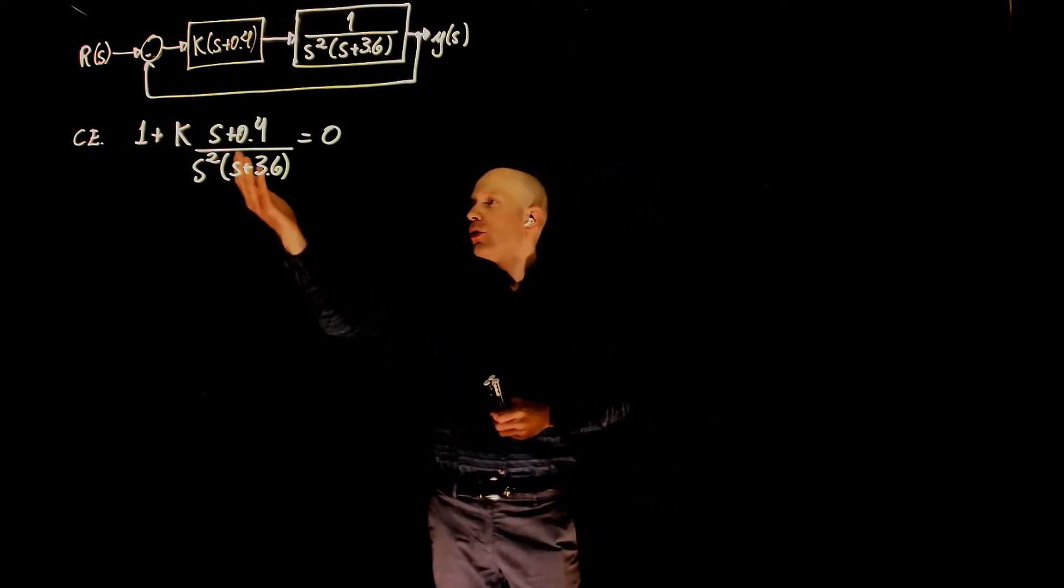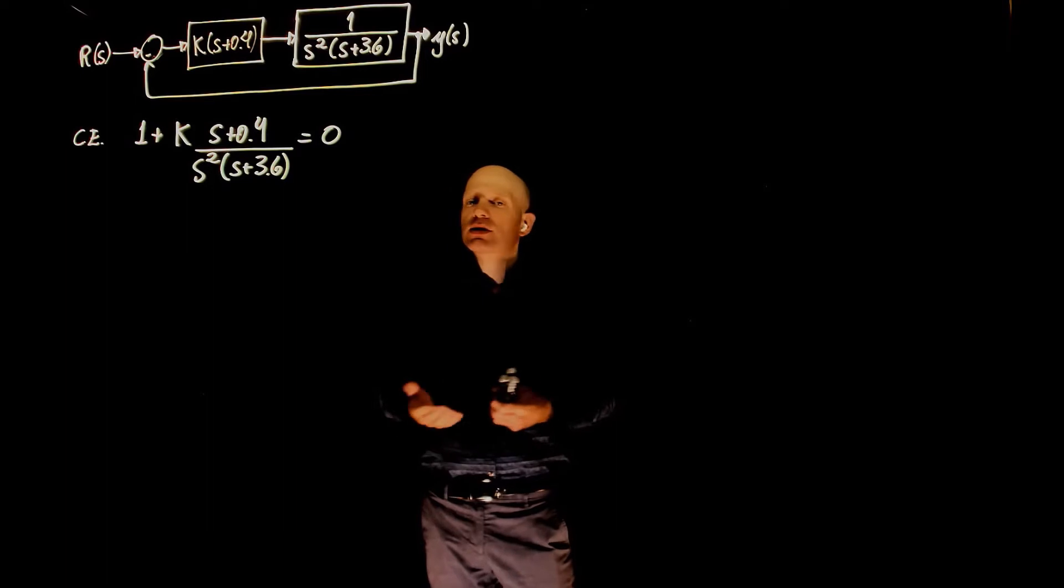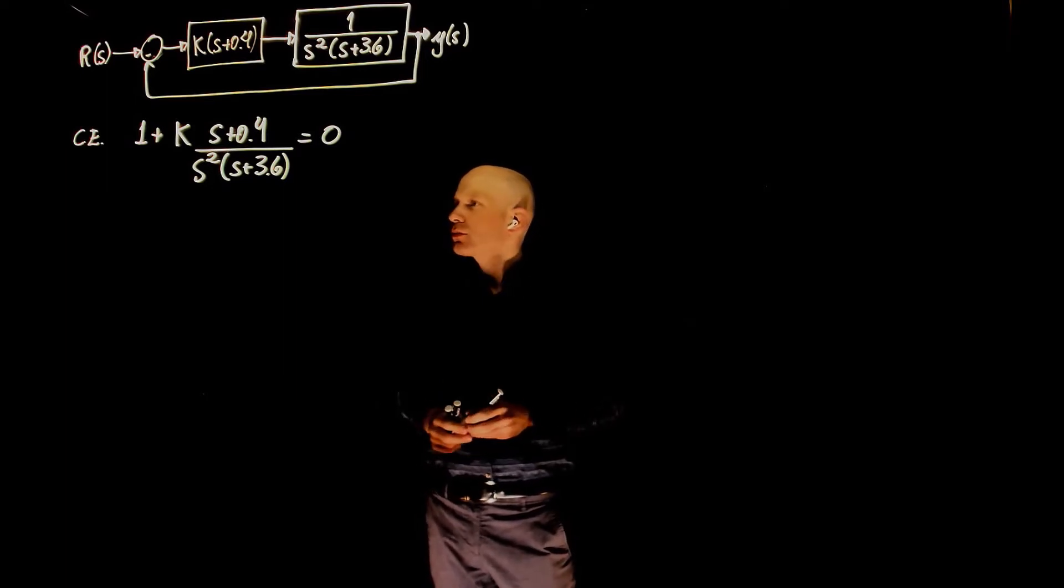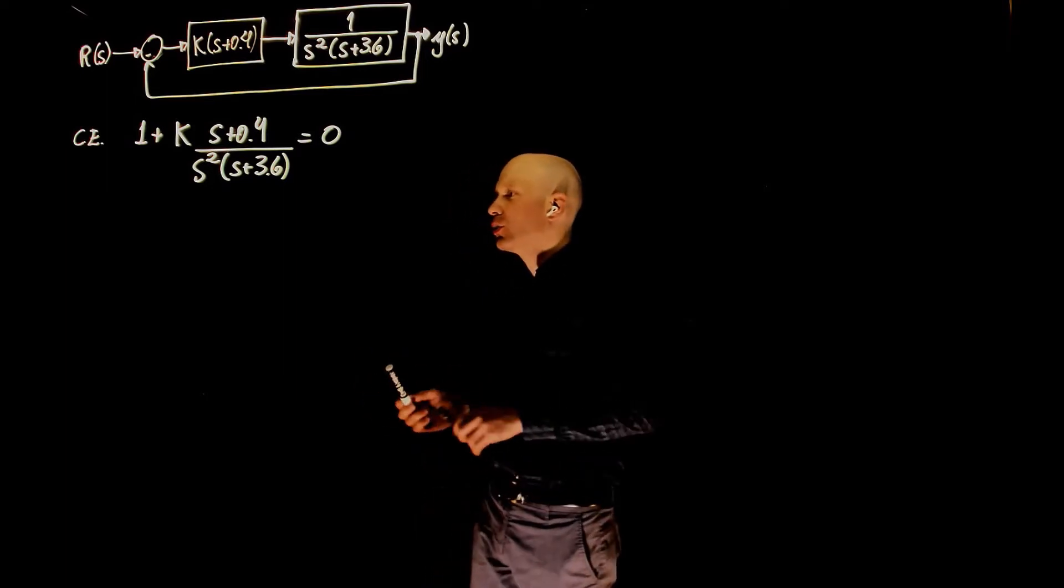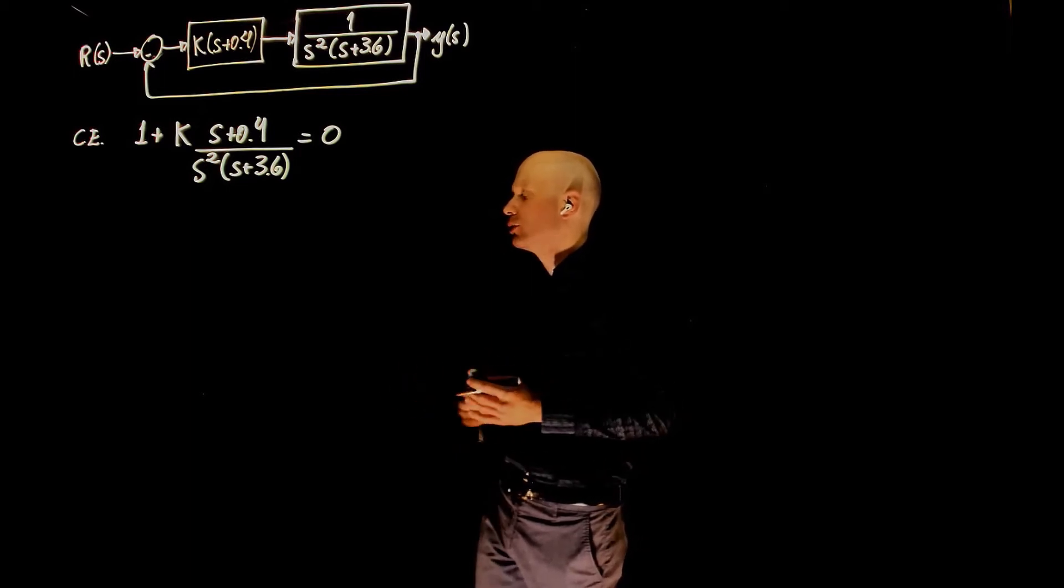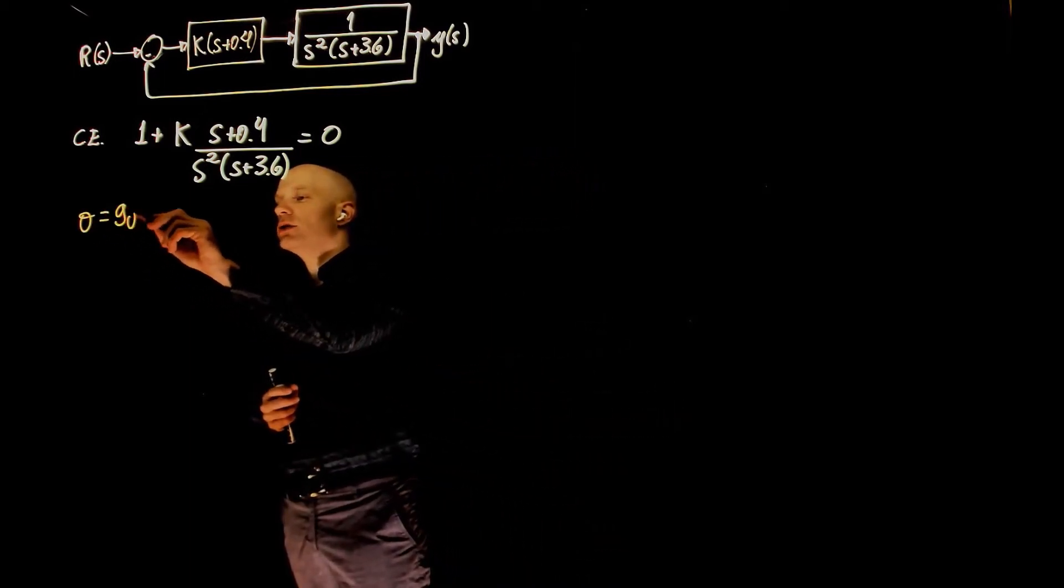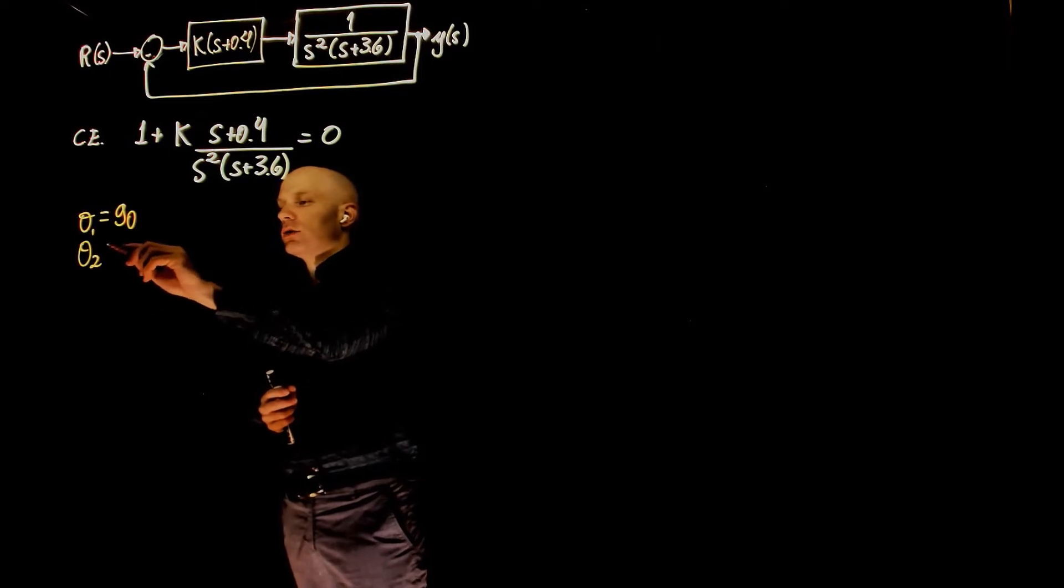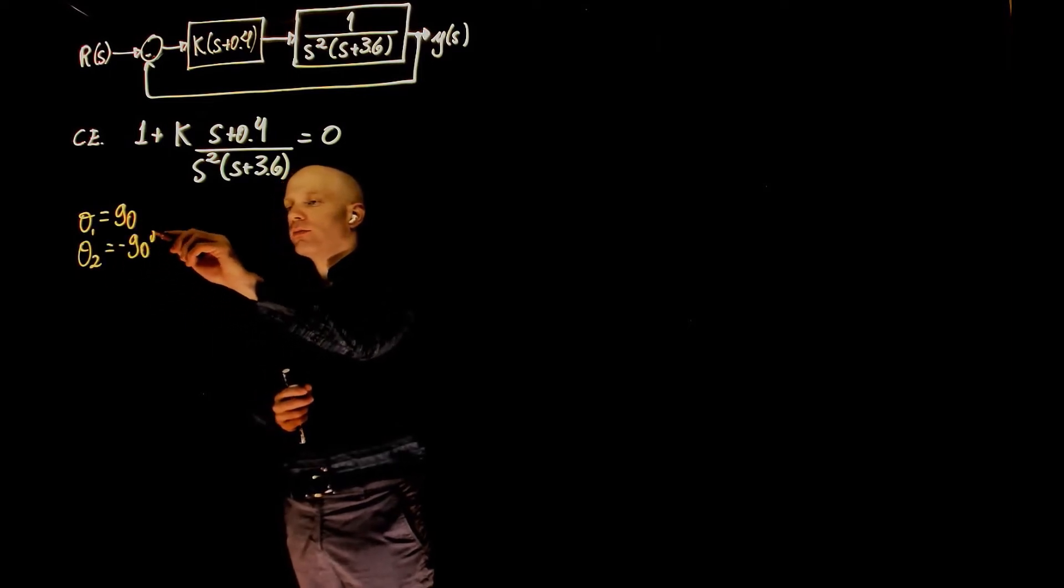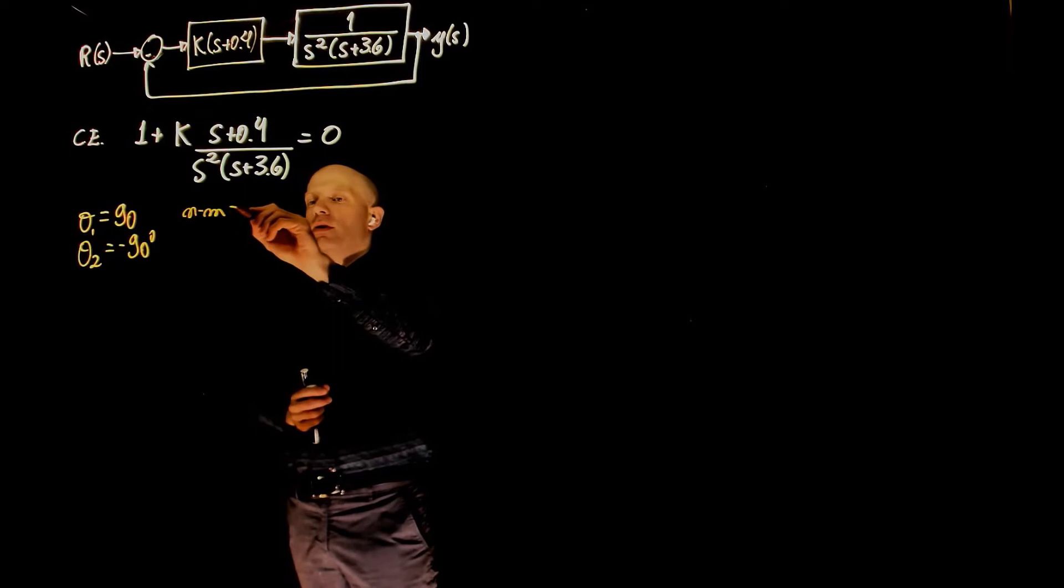We now have three poles and one zero, we have an excess of two poles. And when you have an excess of two poles, we know that we have two asymptotes going to infinity, and they go to infinity at an angle of 90 degrees and negative 90 degrees. Because again, n minus m equals to 2.